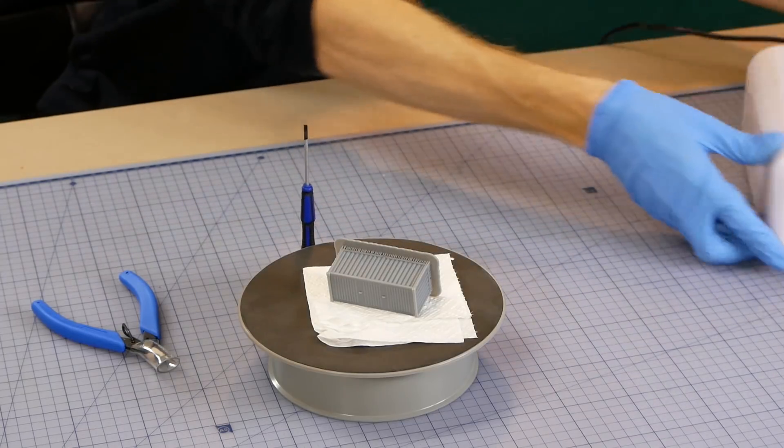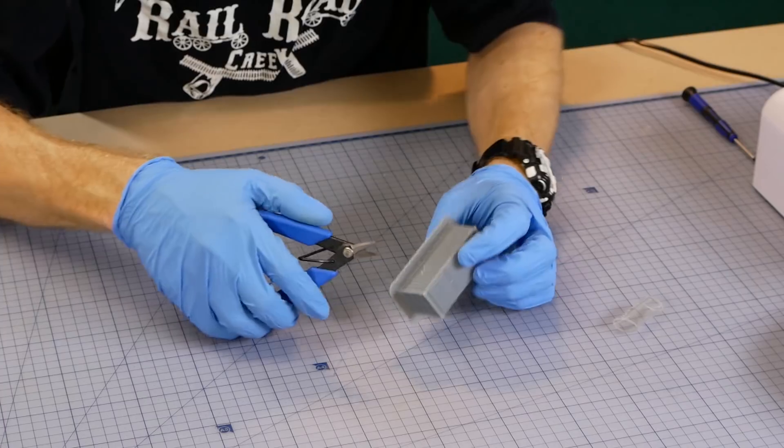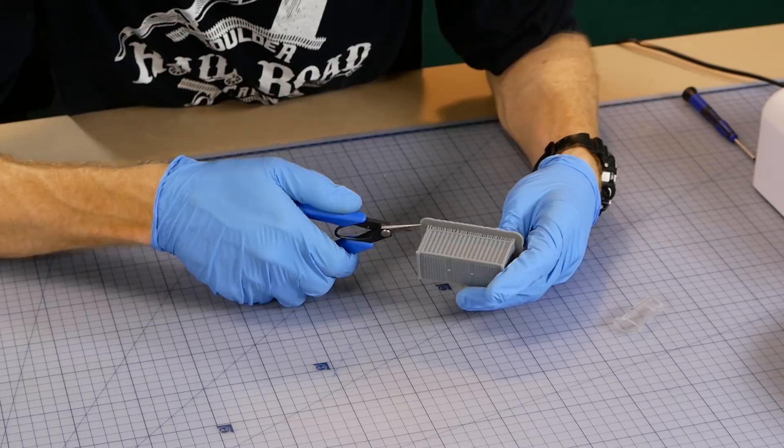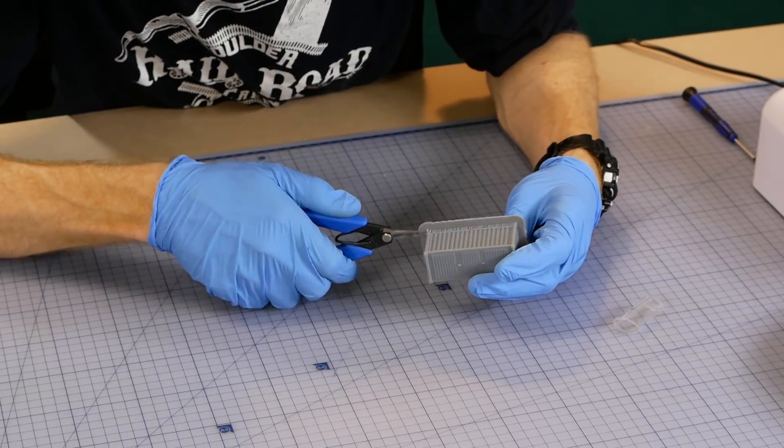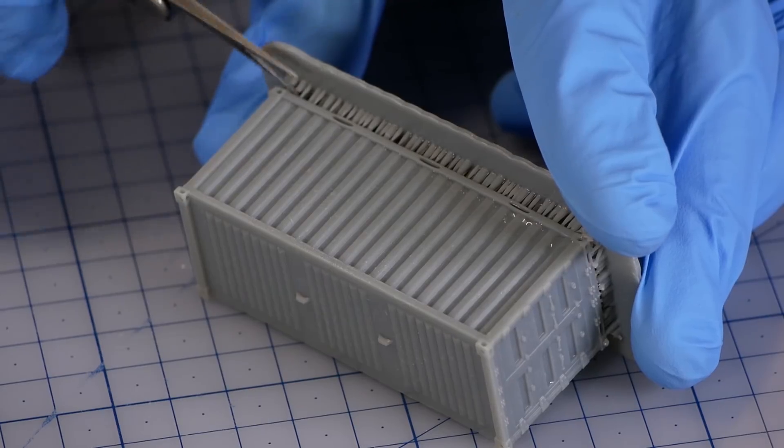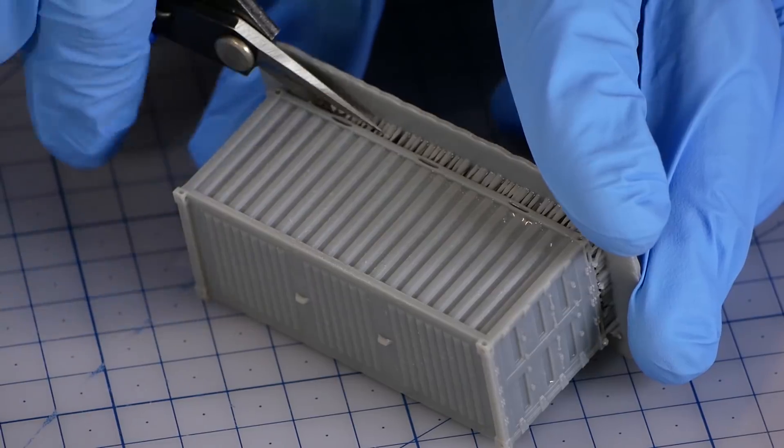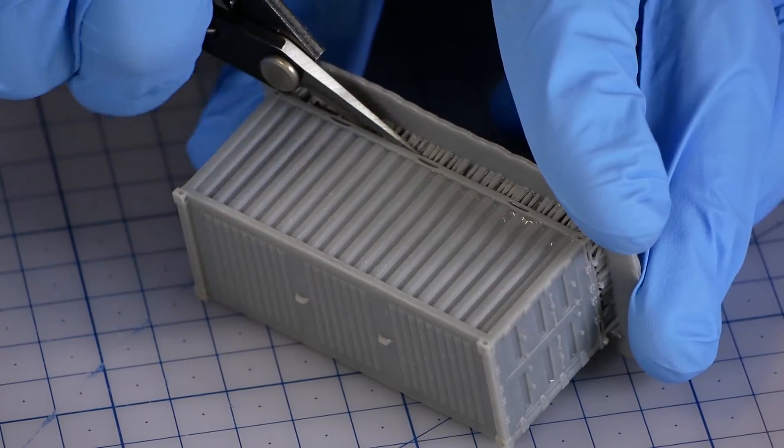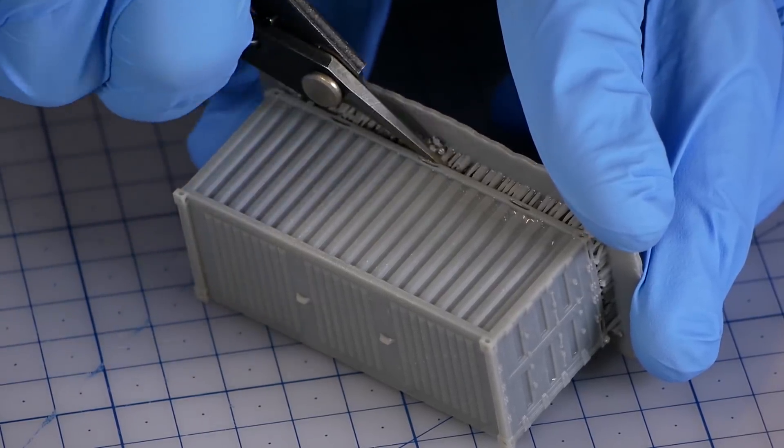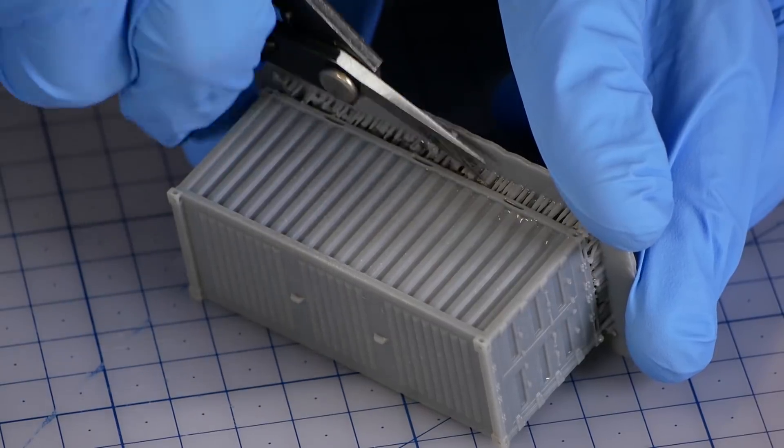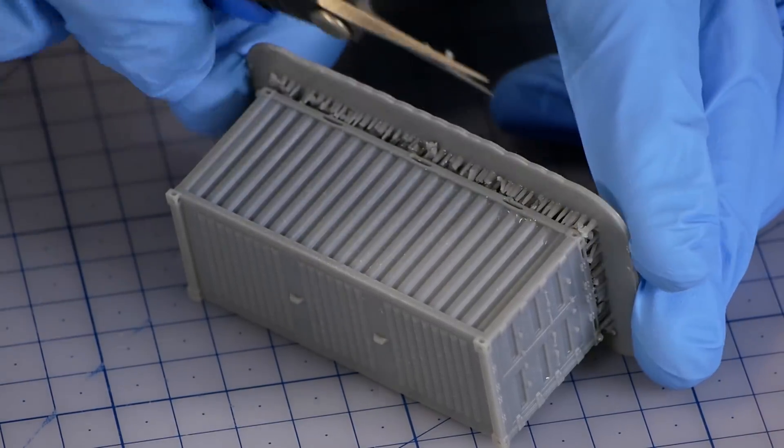Finally we treat the model just like any other model we might buy from the shops. We cut away the unwanted material but just be careful doing this. It's tempting just to rip the model away from its base. However the resin is quite brittle once cured and doing so may cause the model to chip in unwanted places which just means more filing and sanding later.